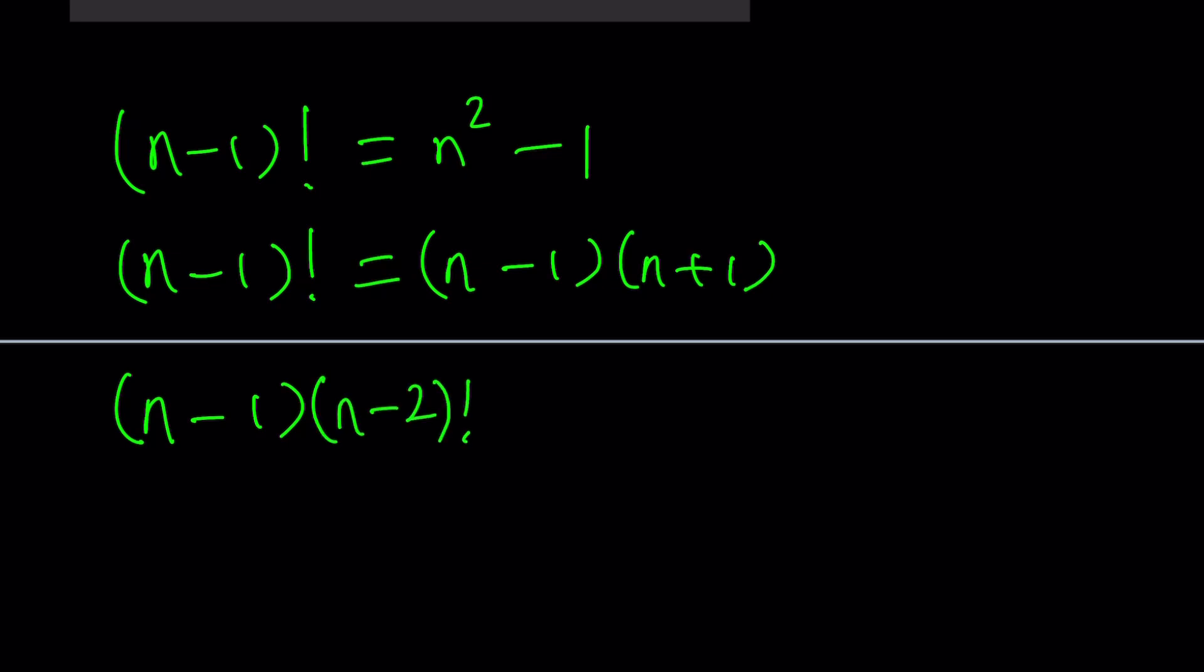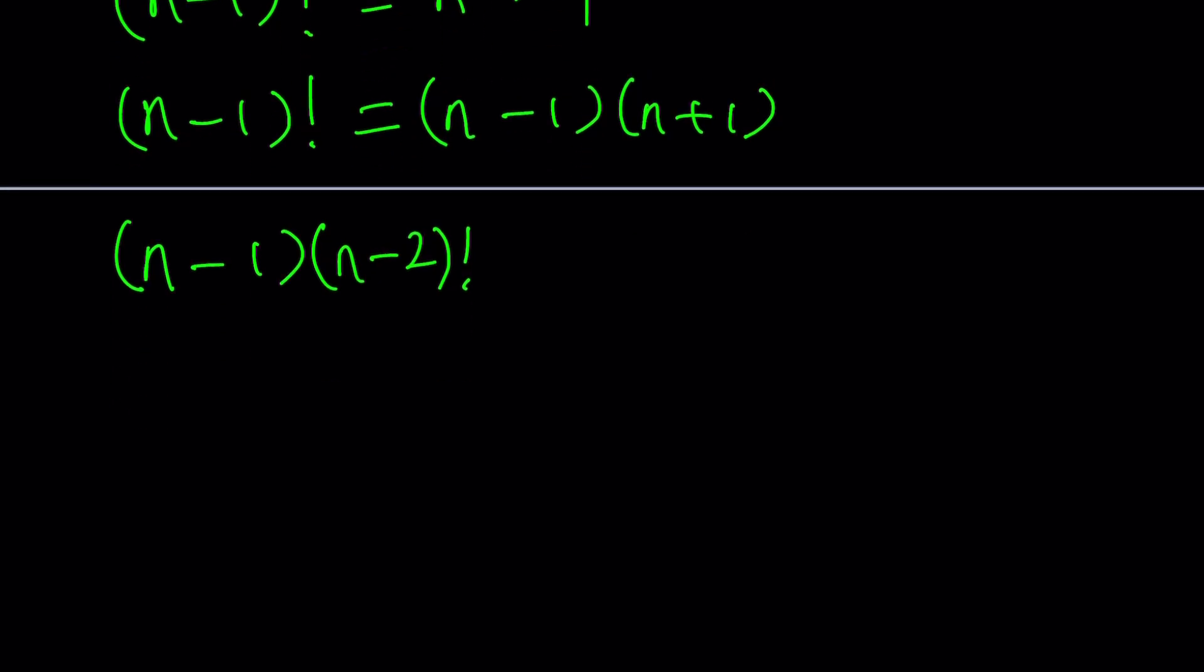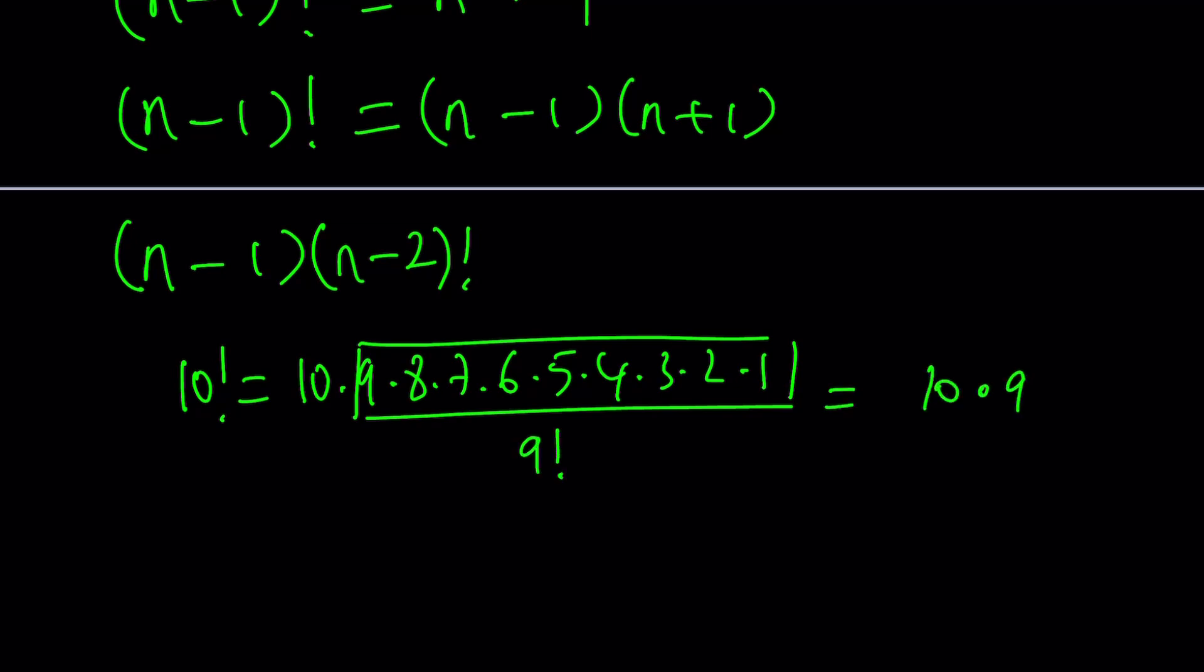So, let's go ahead and expand n minus 1 factorial and write it as n minus 1 multiplied by n minus 2 factorial. Remember, factorials, like, for example, if I have 10 factorial, I can write it as 10 times 9 times 8 times 7 times 6 times 5 times 4 times 3 times 2 times 1. But I can also stop at any point, let's say, the rest of this expression is 9 factorial. So, I can also write the 10 factorial as 10 times 9 factorial. That's what's really nice about factorials. At any point, you can stop and put the exclamation mark, which obviously is not for just emphasis, but for factorial.